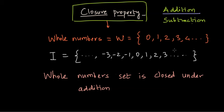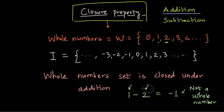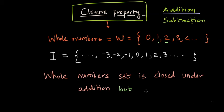There are certain whole numbers where subtracting them gives a negative number, and whole numbers don't include negative numbers. For example, one minus two: both one and two are whole numbers, but the result is minus one, which is not a whole number. Because there is at least one case where the output of subtracting two whole numbers is not a whole number, the whole number set is not closed under subtraction. So: whole numbers are closed under addition but not closed under subtraction.